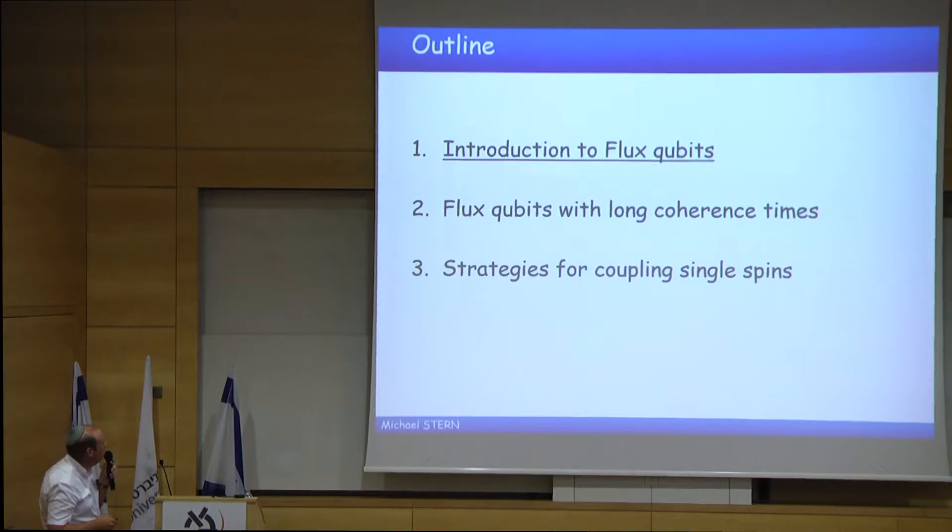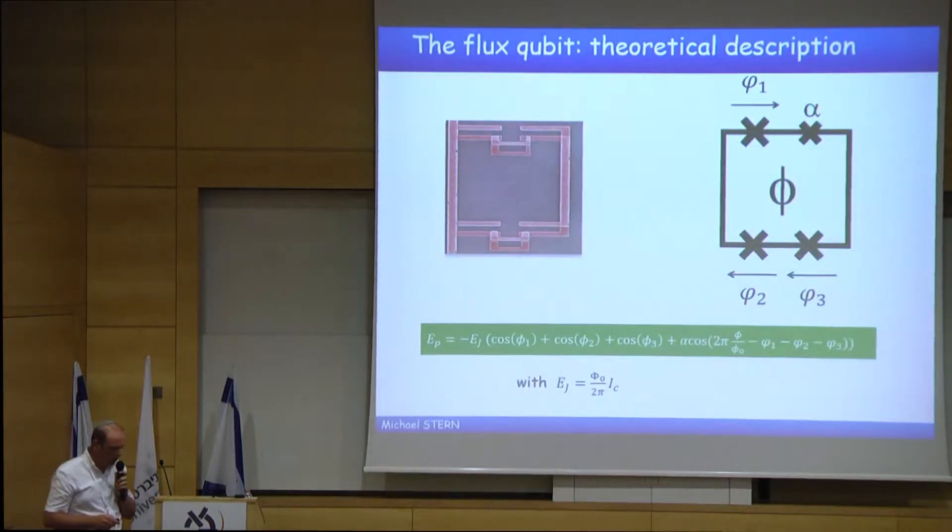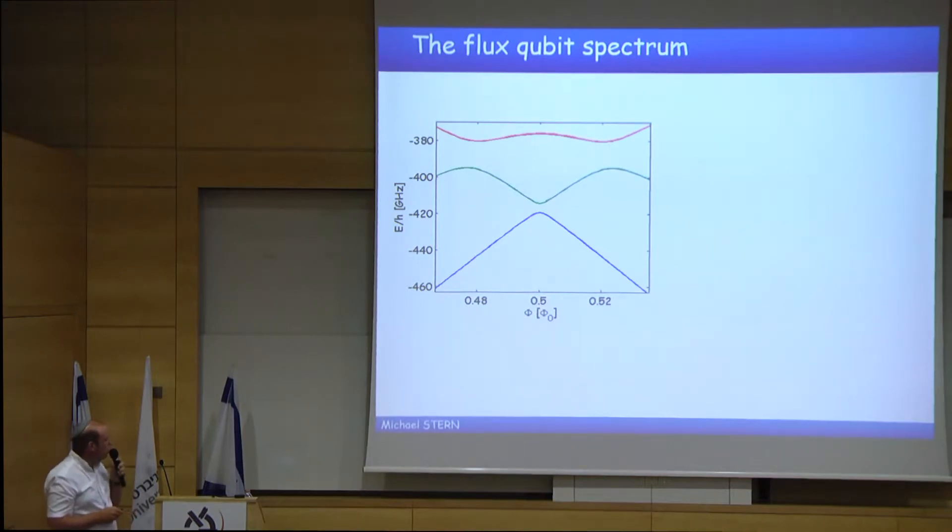I would like to introduce you briefly what are flux qubits. We saw already during the presentation yesterday of Eyal Buks a small presentation of flux qubits. A flux qubit is a superconducting loop intersected by three or four Josephson junctions. It's possible to write the potential energy of a superconducting flux qubit as a sum of the potential energy of each of the junctions. And because we are on a loop, there is a connection between the phase across each junction and the flux threading the loop, which reduces the dimension of the Hamiltonian.